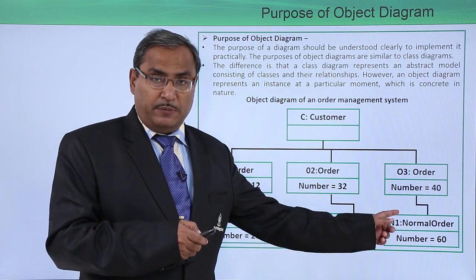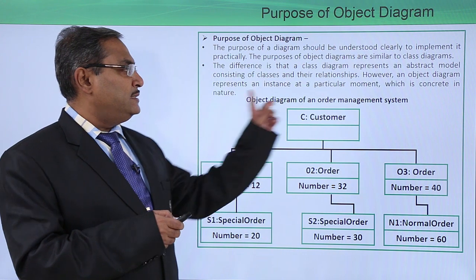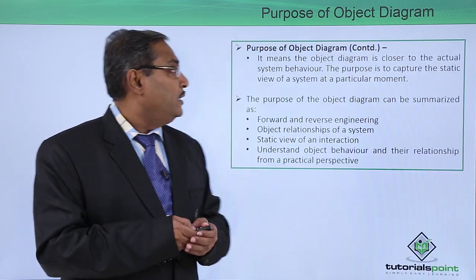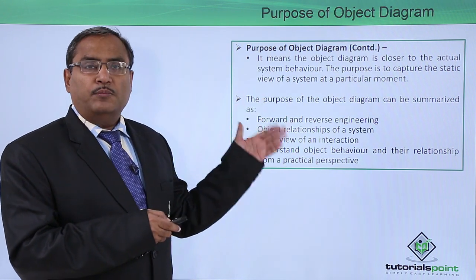Here we are having these respective relationships and this is the object diagram of one order management system. Let us go for some more summary.